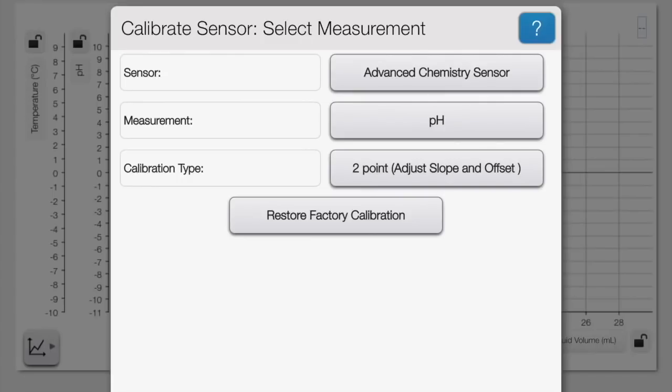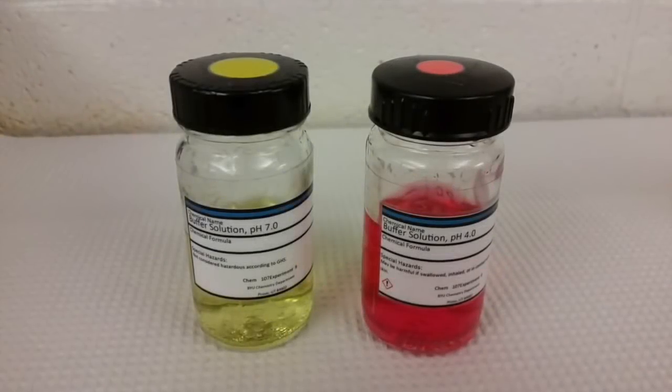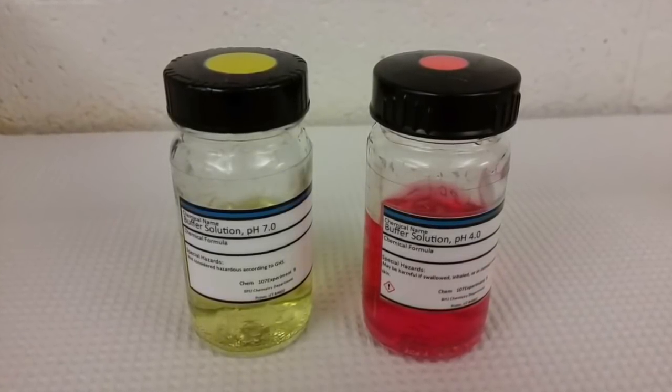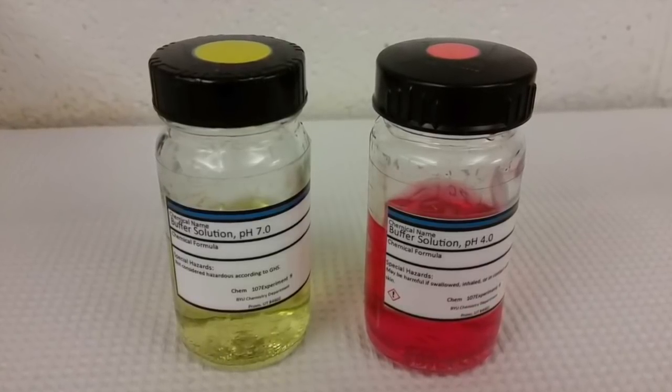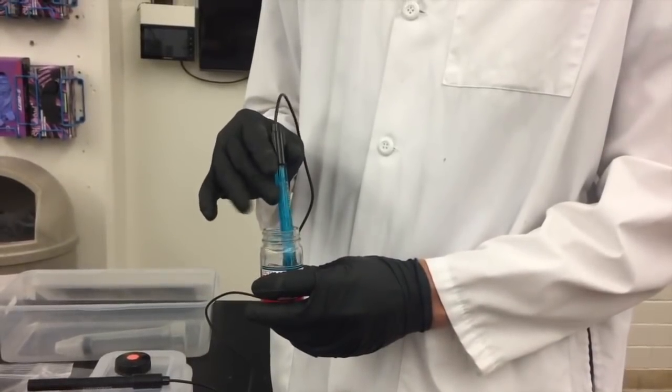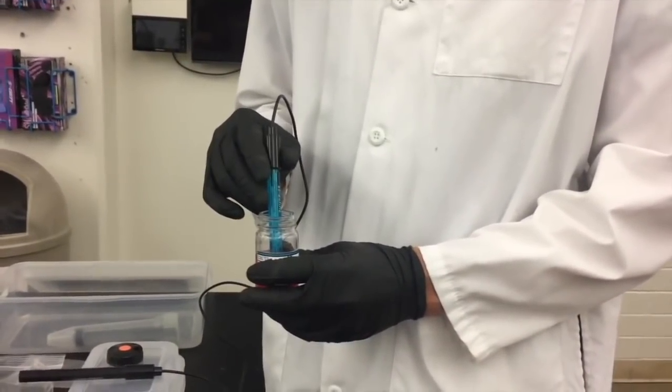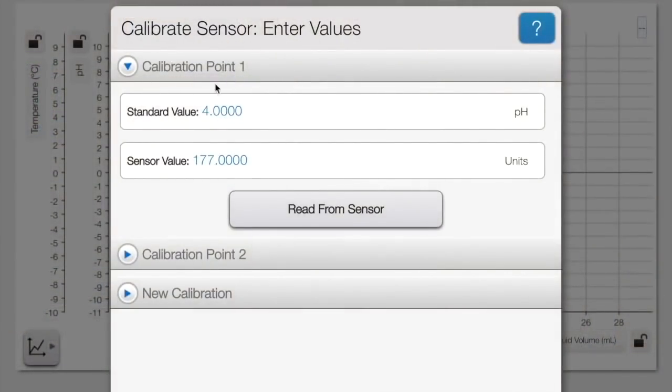You'll need to rinse the pH meter first with distilled water. Then you'll need to find the pH 4 buffer solution. There are only two sets of buffer solutions per lab room so be patient as they're passed around between the lab groups. Once you have the pH 4 buffer solution put the pH meter in the solution and stir it around for at least 30 seconds. Then click read from the sensor where it says pH 4.000.